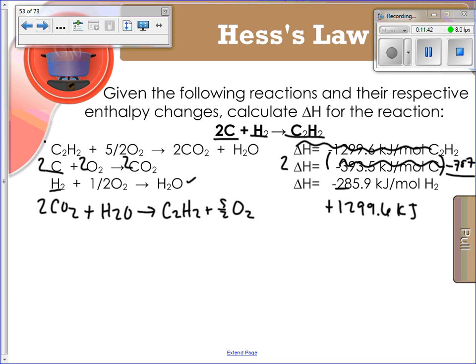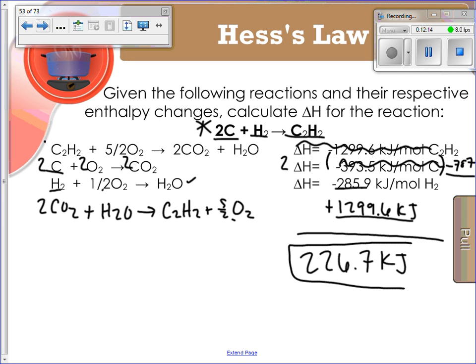So now I've got these three enthalpies to add up. If you were to check your work and rewrite your equation to cancel everything out, you will notice that the 5 halves plus the 2 oxygens and the 1 half oxygen are going to cancel each other out. Adding up the total enthalpies, you're going to get 226.7 kilojoules. And there we go.